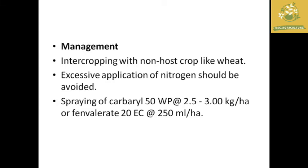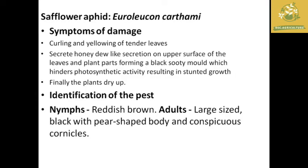The second pest is the safflower aphid, with the scientific name Uroleucon catami. The symptom of damage is curling and yellowing of tender leaves due to sucking of sap from the growing parts. The aphids also secrete honeydew on the upper surface of leaves, which leads to secondary infections like black sooty mold growing on the honeydew secretion.